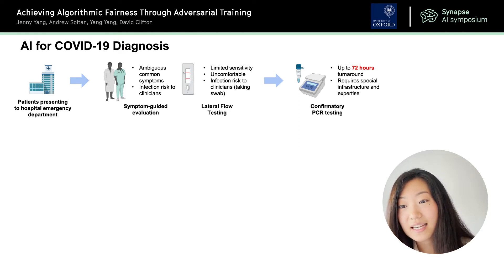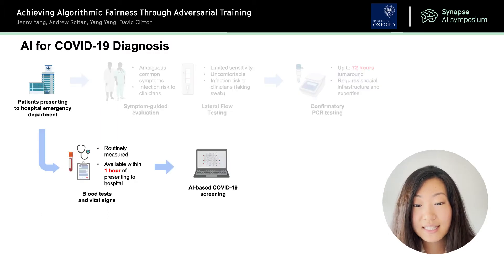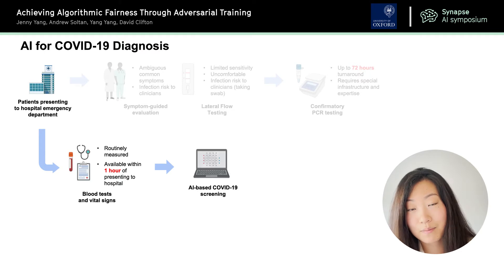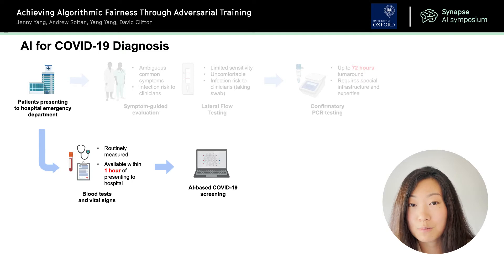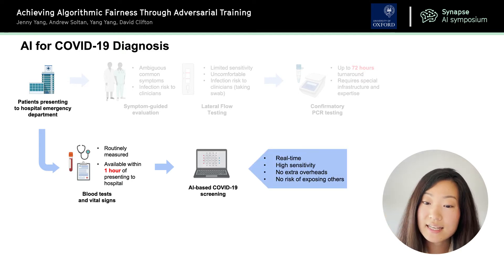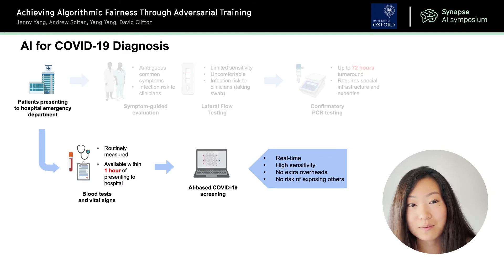In terms of PCR testing, it can have long turnaround times — sometimes up to 72 hours in certain hospitals — and it also requires special infrastructure and expertise to perform. To address these issues we introduced an AI-based COVID-19 screening algorithm which takes in routinely measured features such as blood tests and vital signs, typically available within one hour of each patient presenting to the hospital. The advantages are that it can be performed in real time, it has high sensitivity, there are no extra overheads, and there's no additional risk of exposing others.